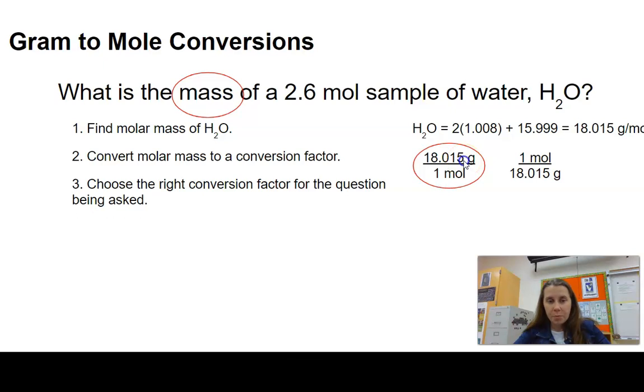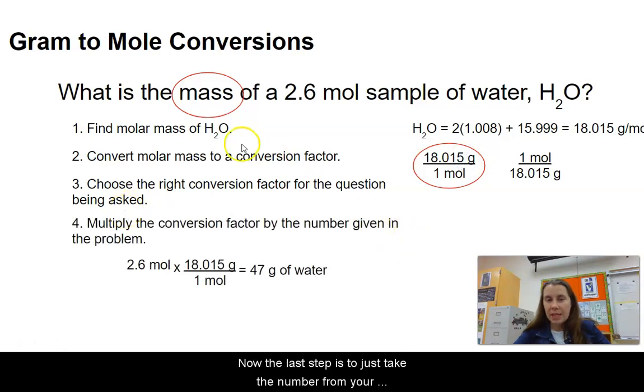Now the last step is to just take the number from your problem, so this is the 2.6 moles, which we have up here, and multiply that by our conversion factor. So it will just be 2.6 moles times 18.015 grams divided by one mole, and that's going to give us 47 grams of water.